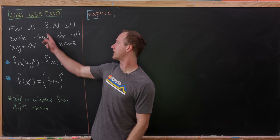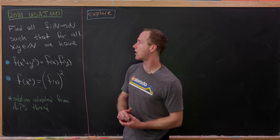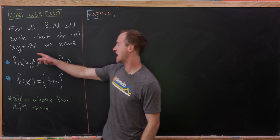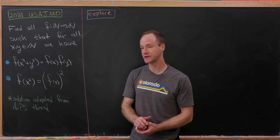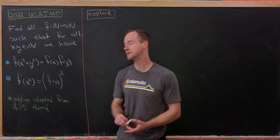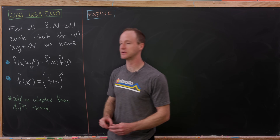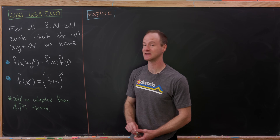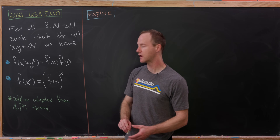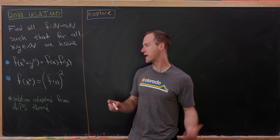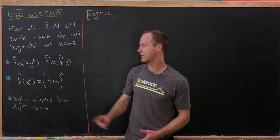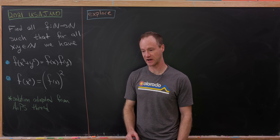So let's see what our goal is. We'd like to find all functions from natural numbers to natural numbers such that if x and y are natural numbers, the following two equations are satisfied: f(x² + y²) = f(x)·f(y), and f(x²) = f(x)², where in the second equation the square is inside the function on the left and outside on the right.